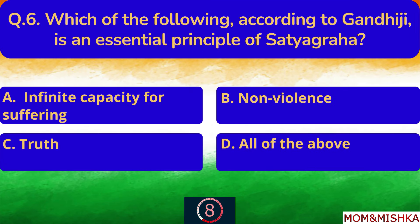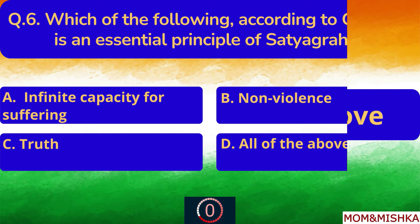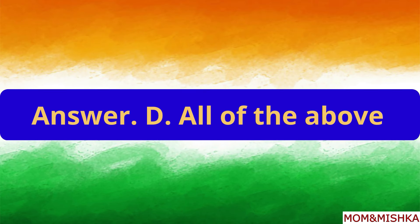Which of the following, according to Gandhiji, is an essential principle of Satyagraha? It's all of the above. Option D.